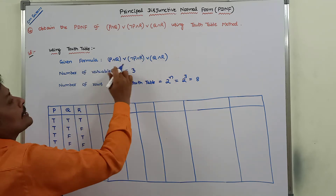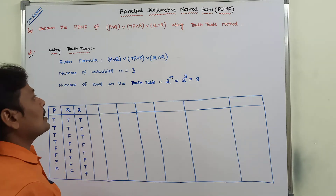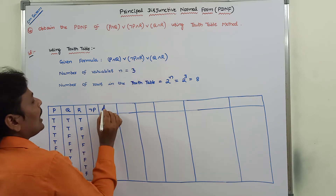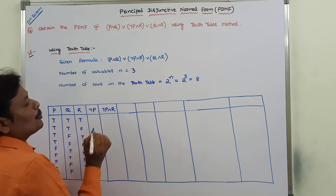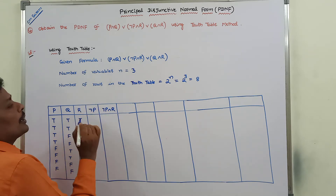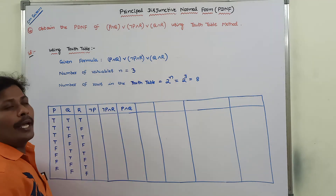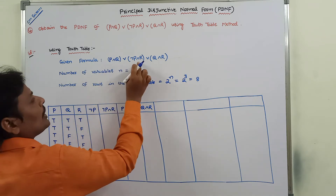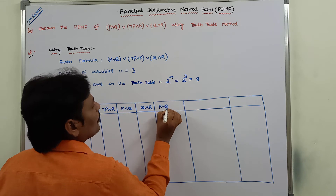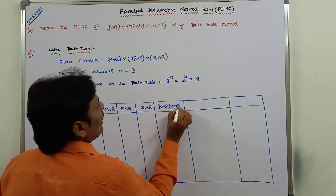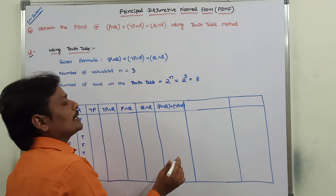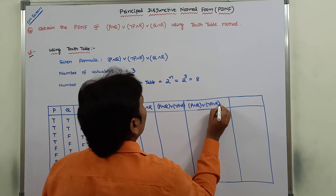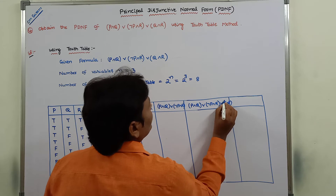Next, what are the subcomponents in the given formula? The subcomponents are: first, negation P. Once we find negation P, it is combined with R using the AND connective to give ¬P∧R. Another subcomponent is P∧Q, and another subcomponent is Q∧R. After that we combine P∧Q with ¬P∧R using OR, and then combine that with Q∧R to get the entire formula: (P∧Q) ∨ (¬P∧R) ∨ (Q∧R).